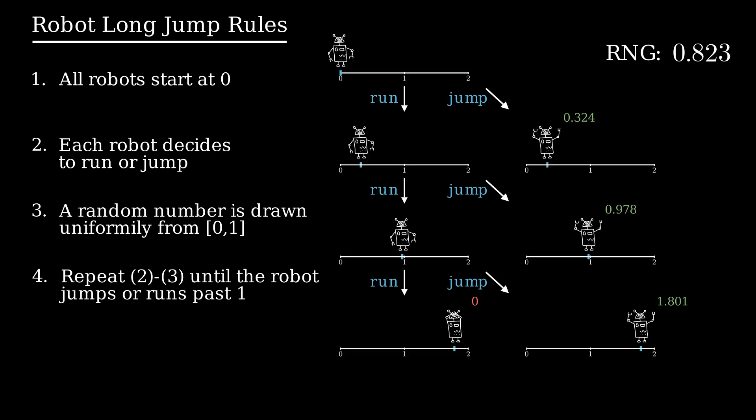Ultimately, a long jump consists of repeatedly drawing uniform random variables until you deem that further tempting the RNG gods is too risky and you jump, or your hubris or lack of luck result in a fault.